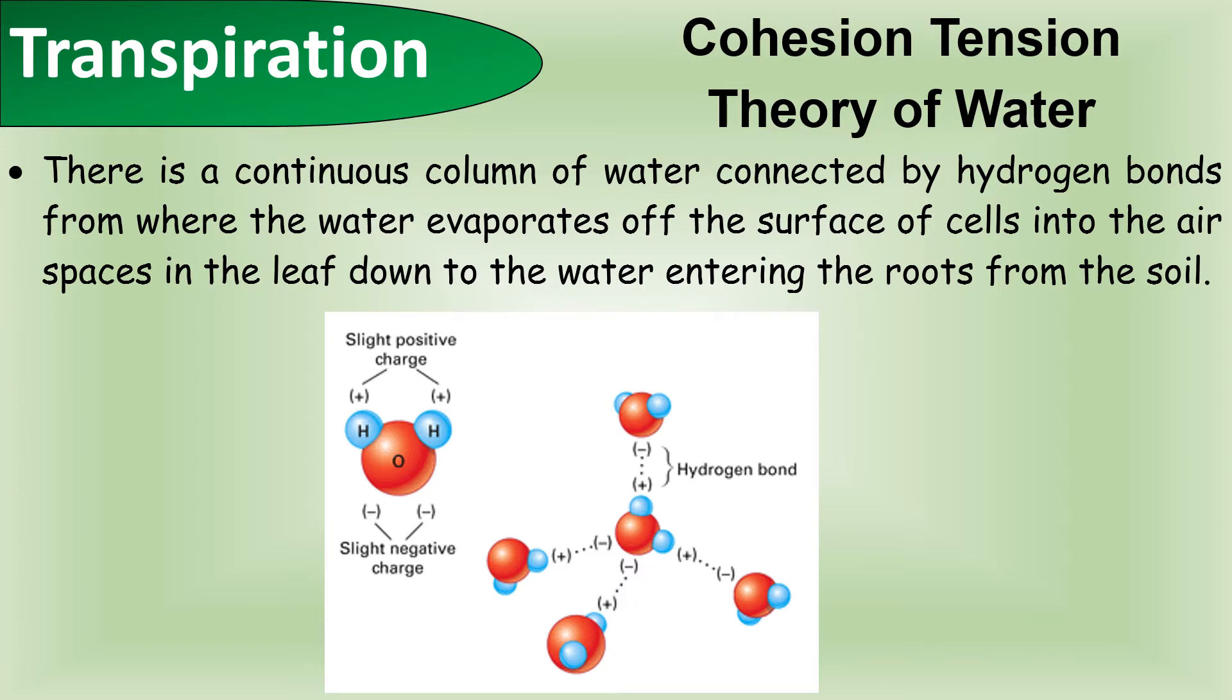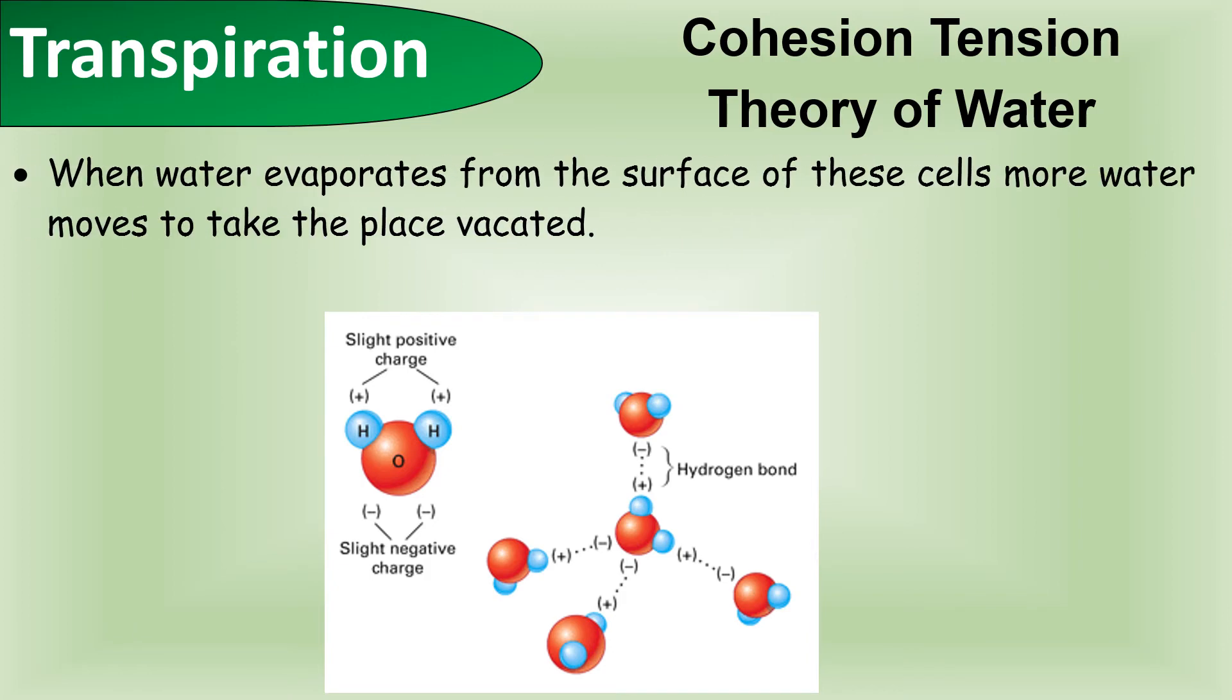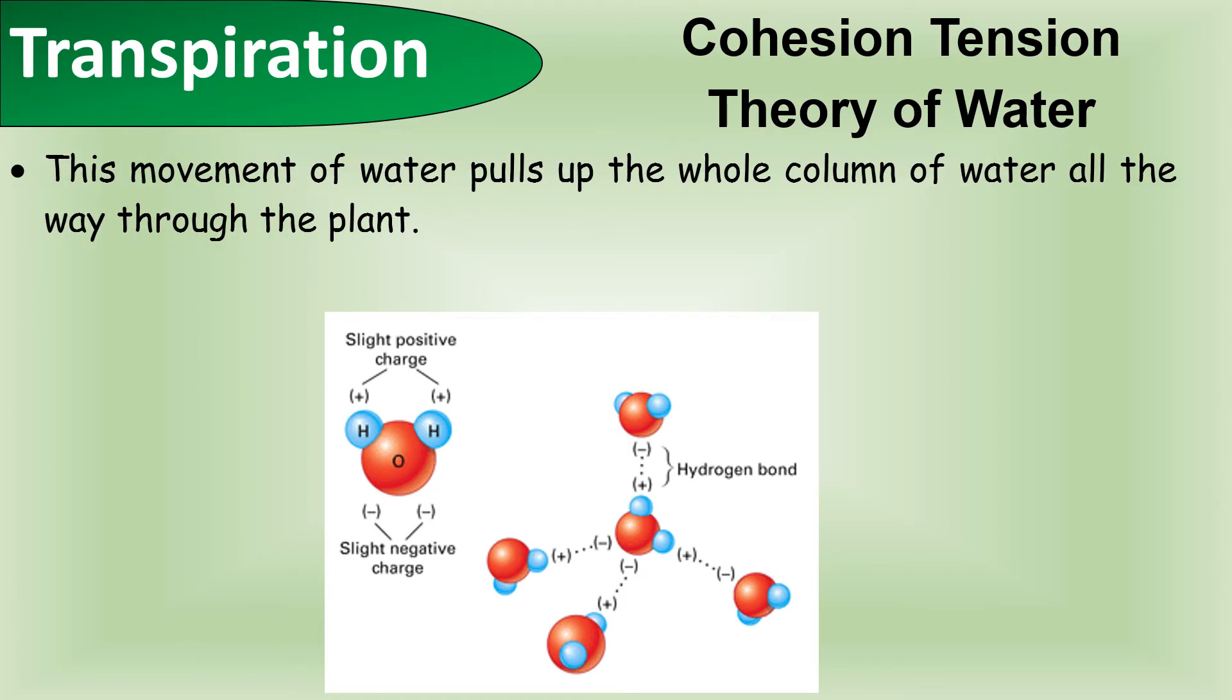There is a continuous column of water connected by hydrogen bonds from where the water evaporates off the surface of the cells into the air spaces in the leaf down the water concentration gradient. When water evaporates from the surface of these cells, more water moves up to take the place that has now been vacated. The movement of the water pulls the whole column of water up all the way through the plant.